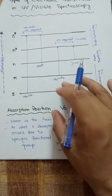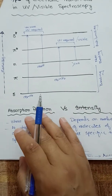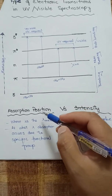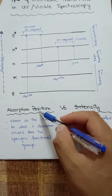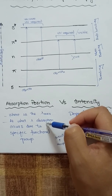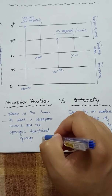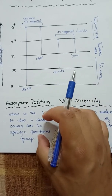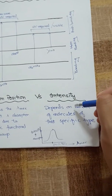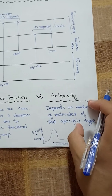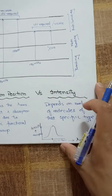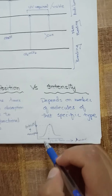Looking at the terminologies of absorption position and intensity: the absorption position is the lambda max, which is the position where absorption occurs due to a specific functional group — it is where we obtain the peak in the graph. Intensity depends on the number of molecules or the amount of that specific functional group present.